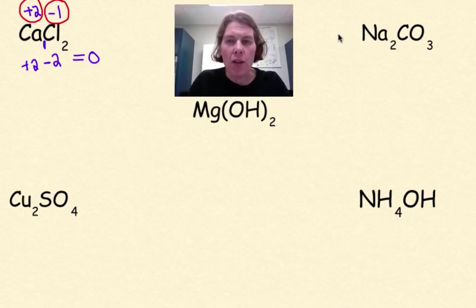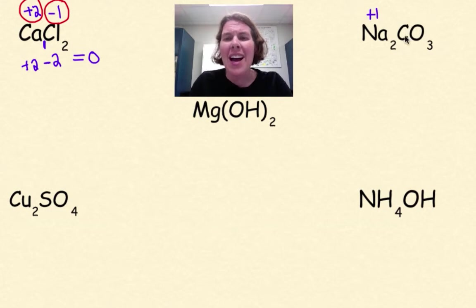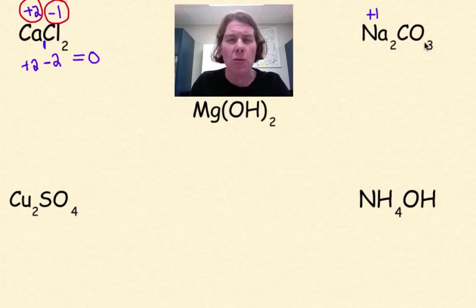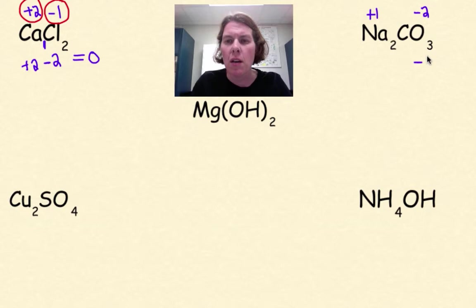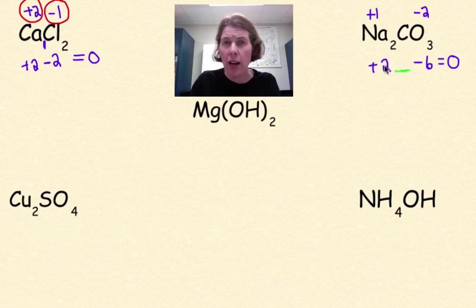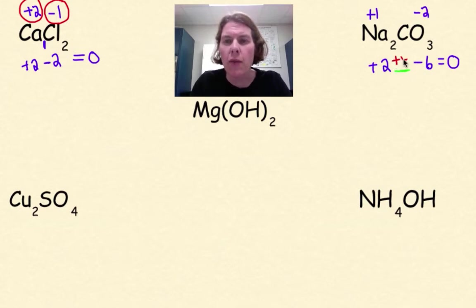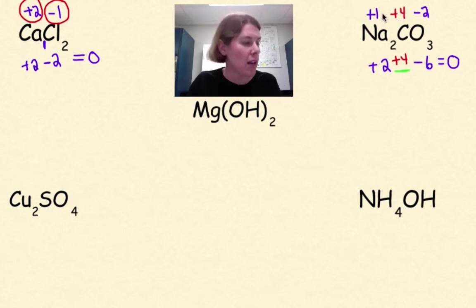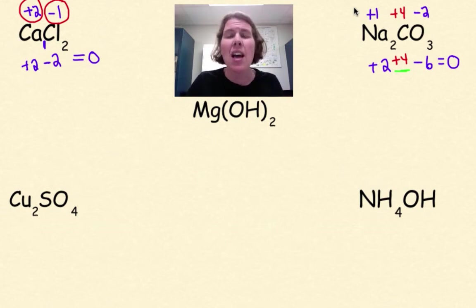Let's look at sodium carbonate, Na2CO3. Sodium only has one charge: plus one. Carbon has multiple oxidation states, so I'll leave that for now. Oxygen is minus two, so minus two times three gives negative six. The whole thing equals zero. One times two gives plus two. So the question is: what number for carbon, when all numbers are added together, gives an overall charge of zero? The answer is plus four — carbon here is plus four. Check your reference table to confirm that charge exists.